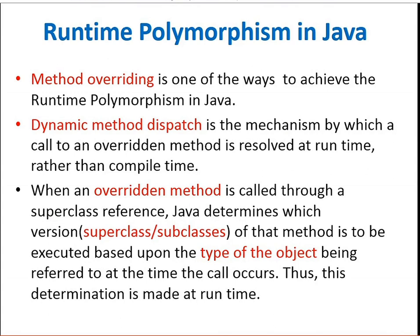Don't be confused between method overriding and method overloading. Method overloading means the same method name with different parameters, but method overriding means the method name and parameters are also the same in both the parent class as well as the child class.